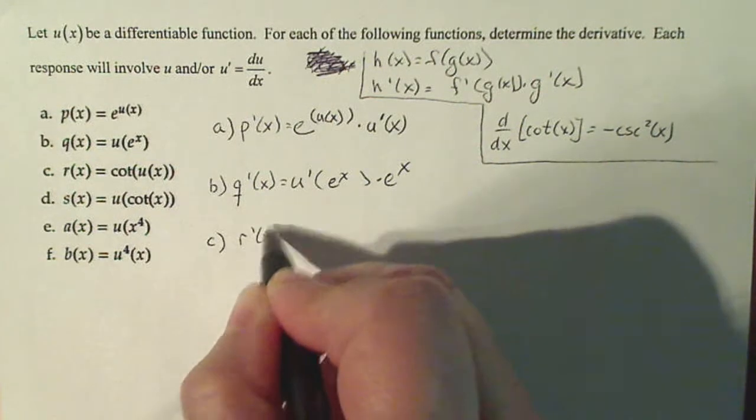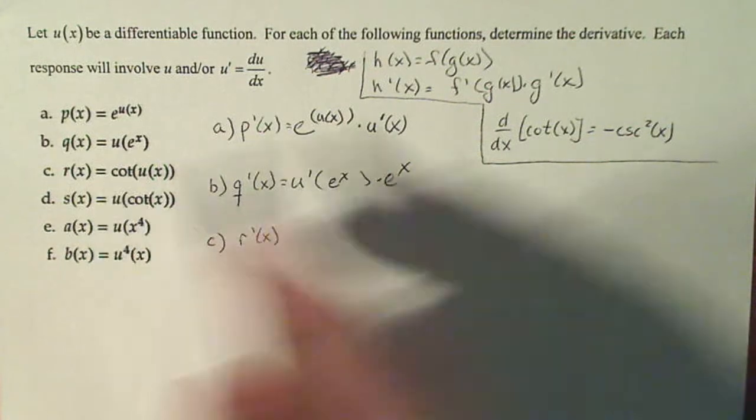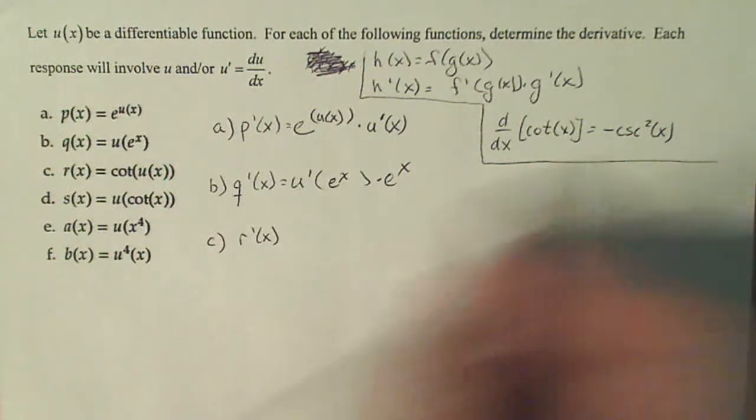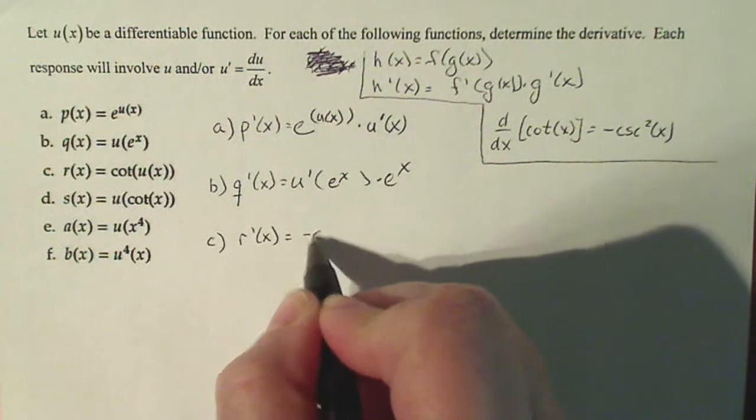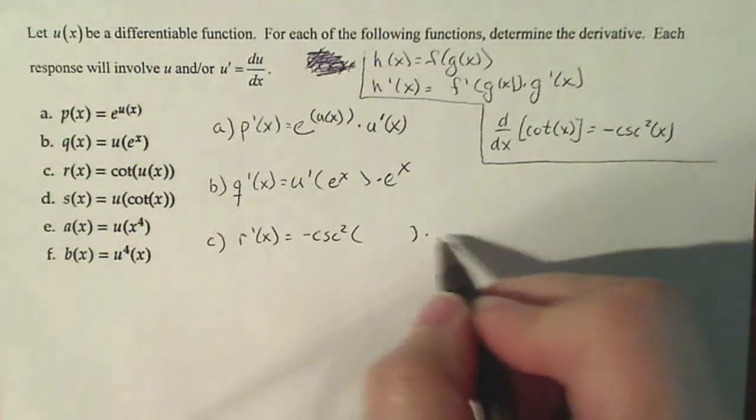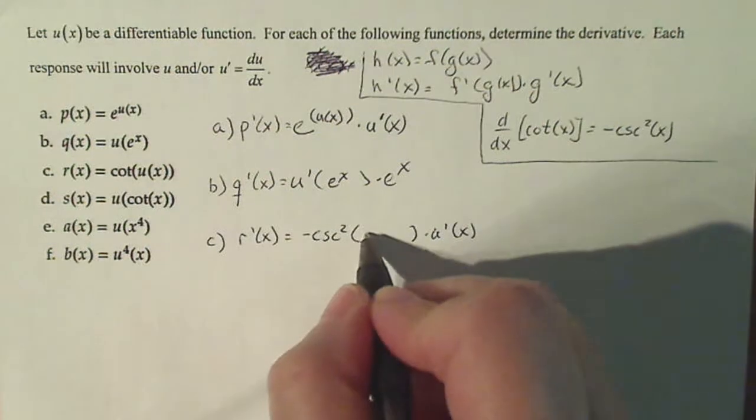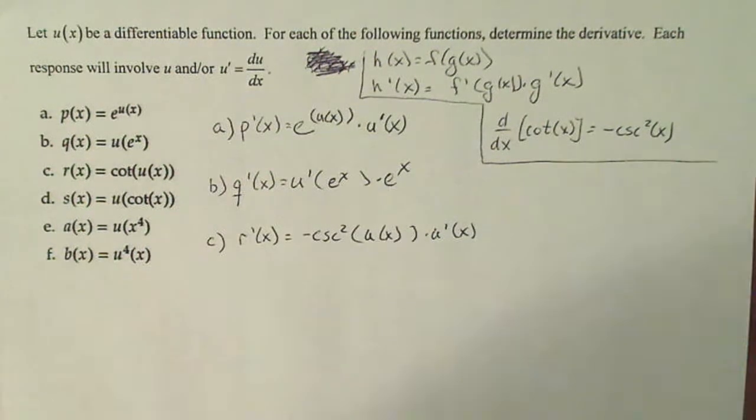C, r prime of x. My interior is u, my exterior is cotangent. So I take the derivative of the outside, minus cosecant squared, derivative of the inside, u prime, and I put the original interior inside the derivative of the outside.